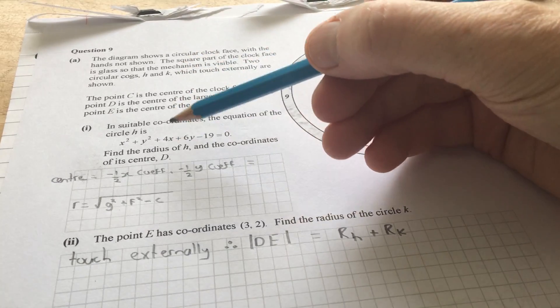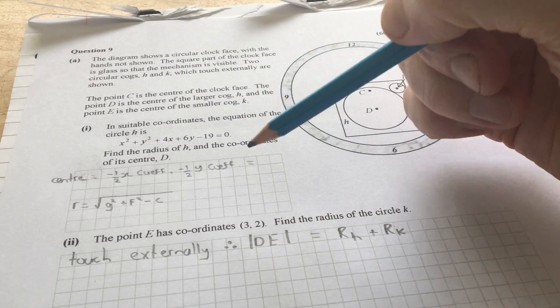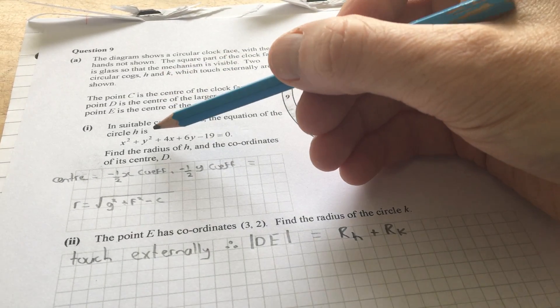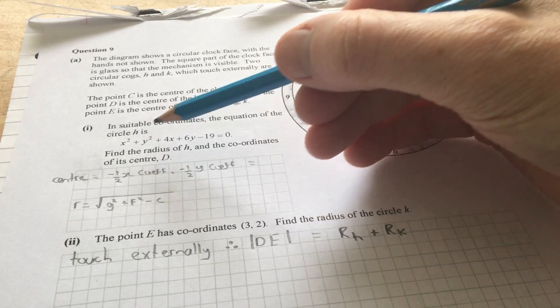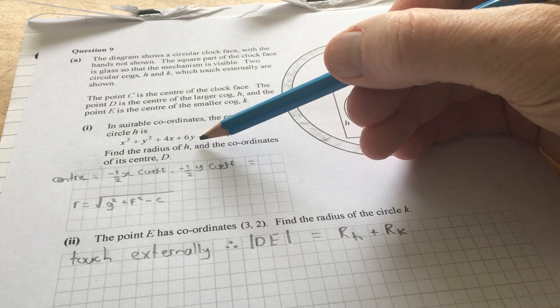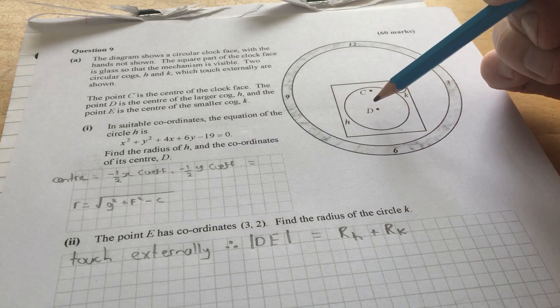Okay, so there's quite a bit of detail in this bit here. I'll let you read through it, and we'll just work through the questions here. In suitable coordinates, the equation of the circle H is given to you in this form. Find the radius of H and the coordinates of its center, D.